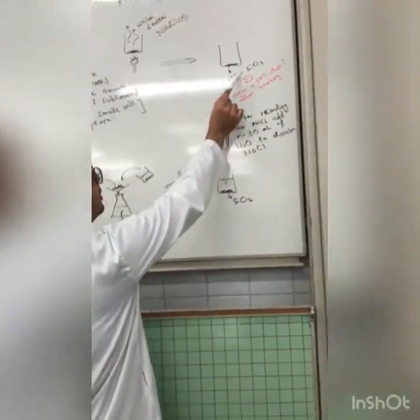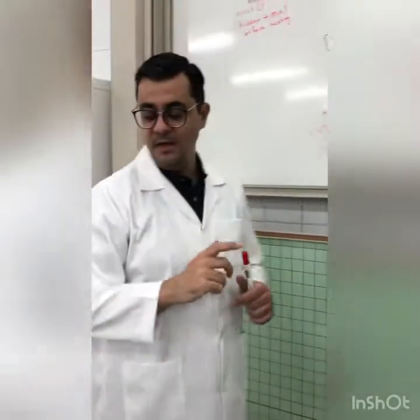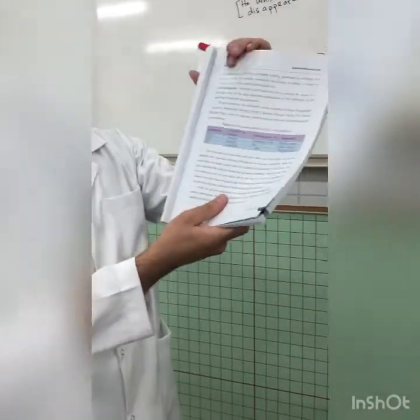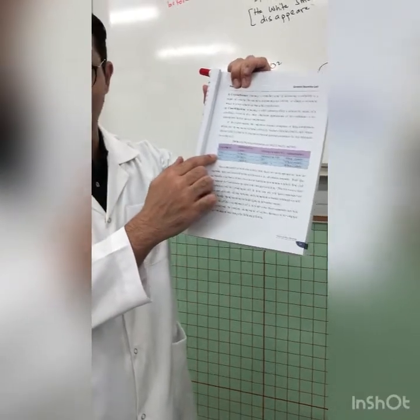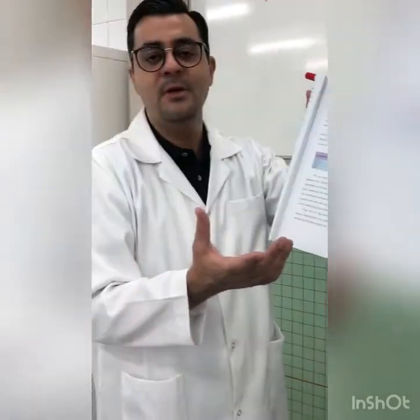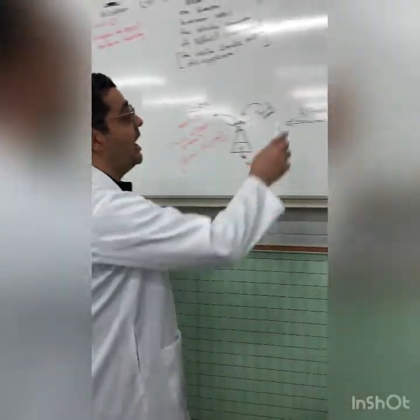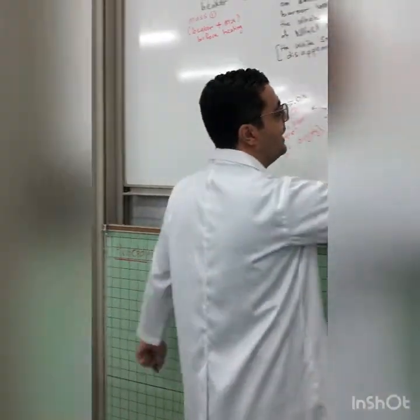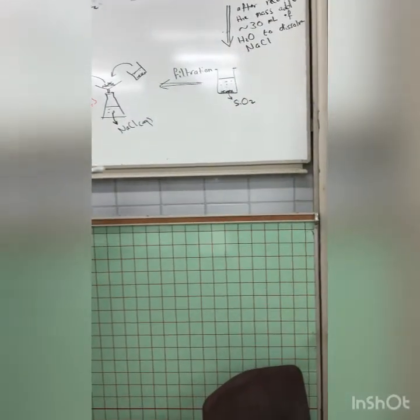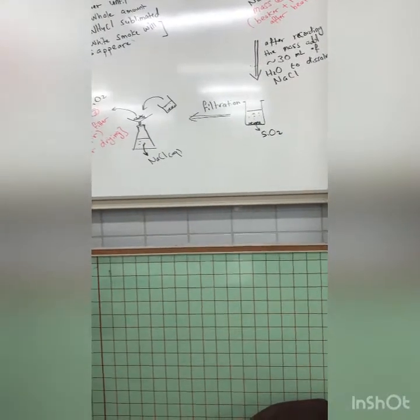Now we need to separate sodium chloride from silicon dioxide. According to the physical properties table in the lab manual, sodium chloride is soluble in water — as we know, table salt dissolves in water — while silicon dioxide (sand) is insoluble. So if we add about 30 milliliters of water to the mixture and stir it, sodium chloride will dissolve while silicon dioxide will remain as a precipitate.